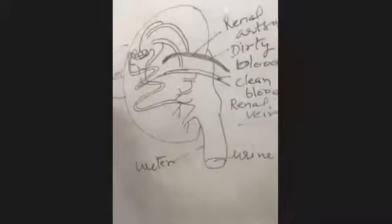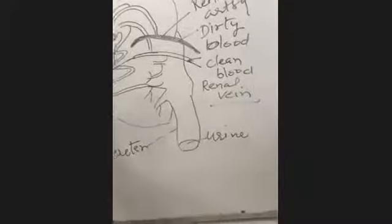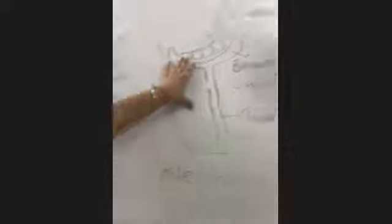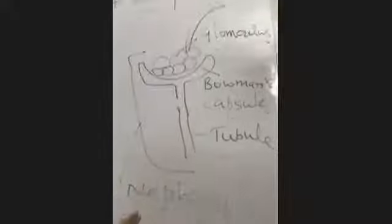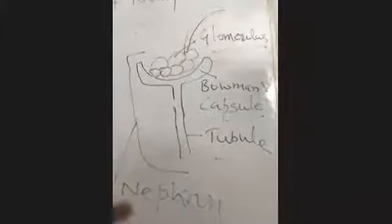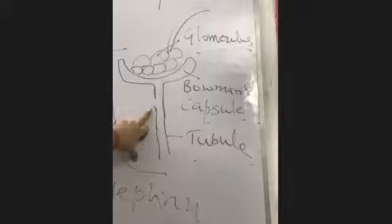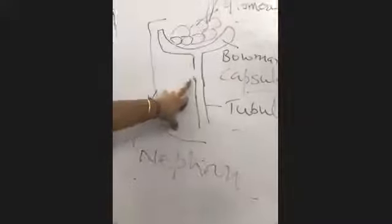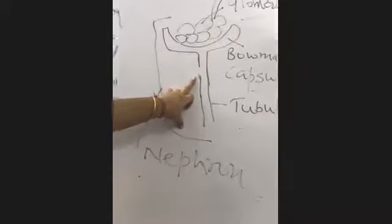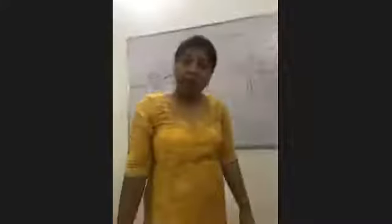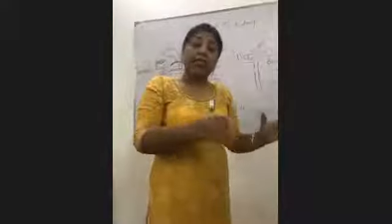When the blood reaches the glomerulus and is filtered, the poisonous and toxic substances enter the tubule as liquid urine. After filtration, when the blood is cleaned, the glomerulus end connects to the renal vein. The renal vein takes the clean blood back into the body.